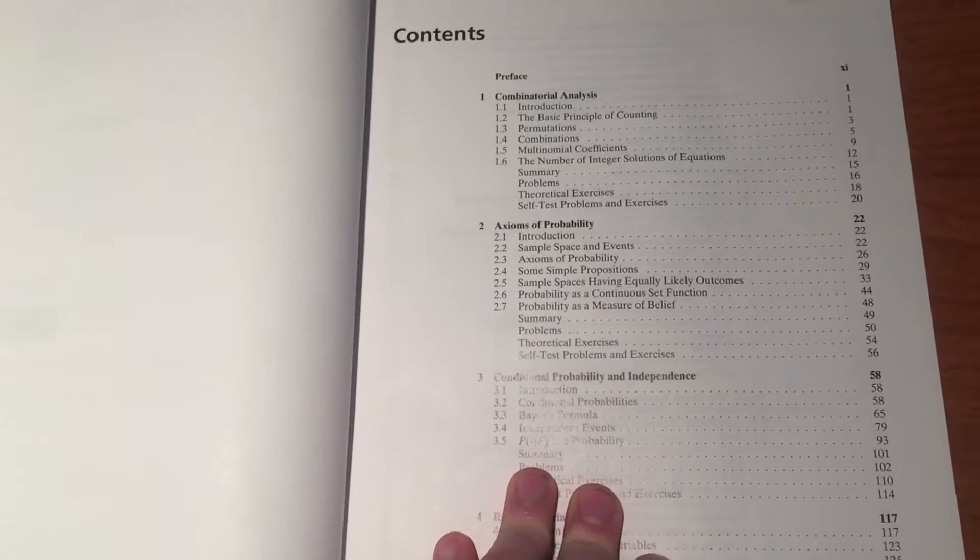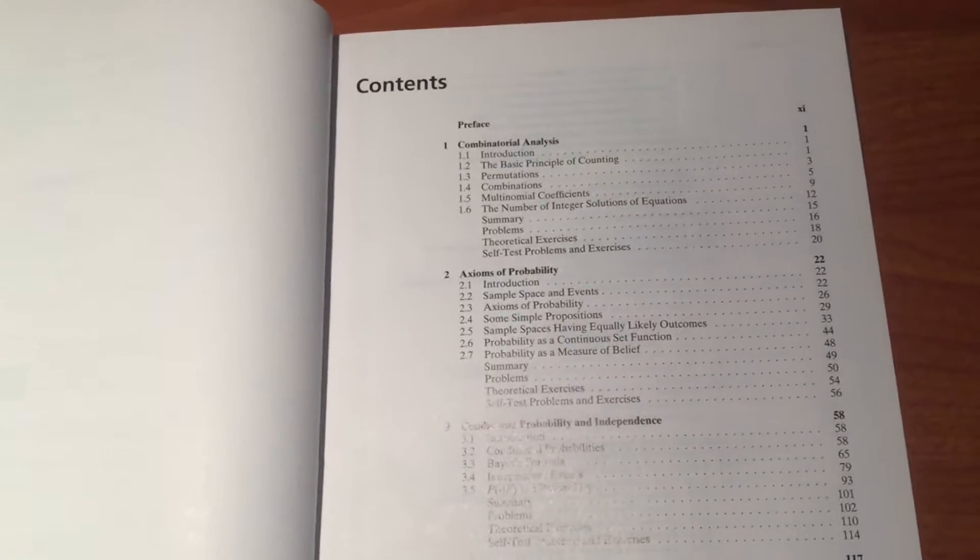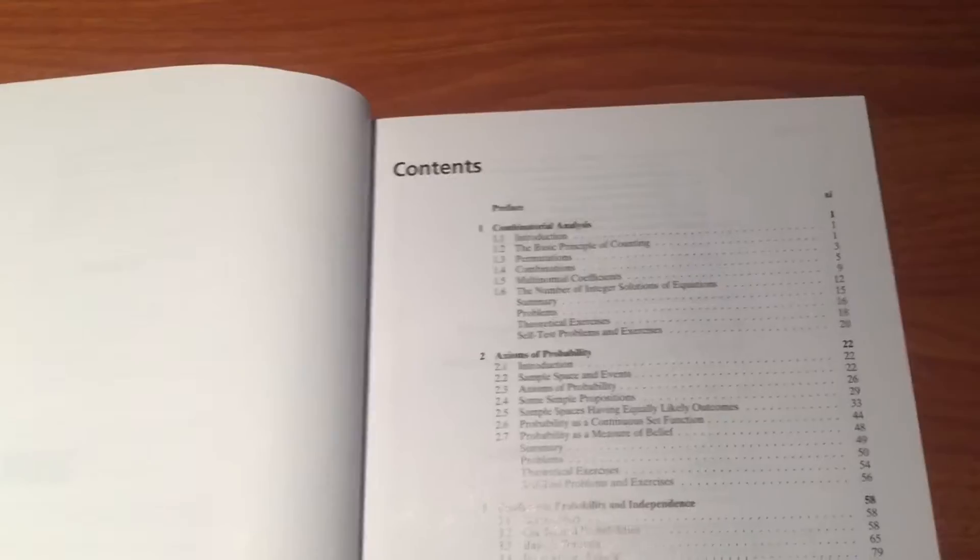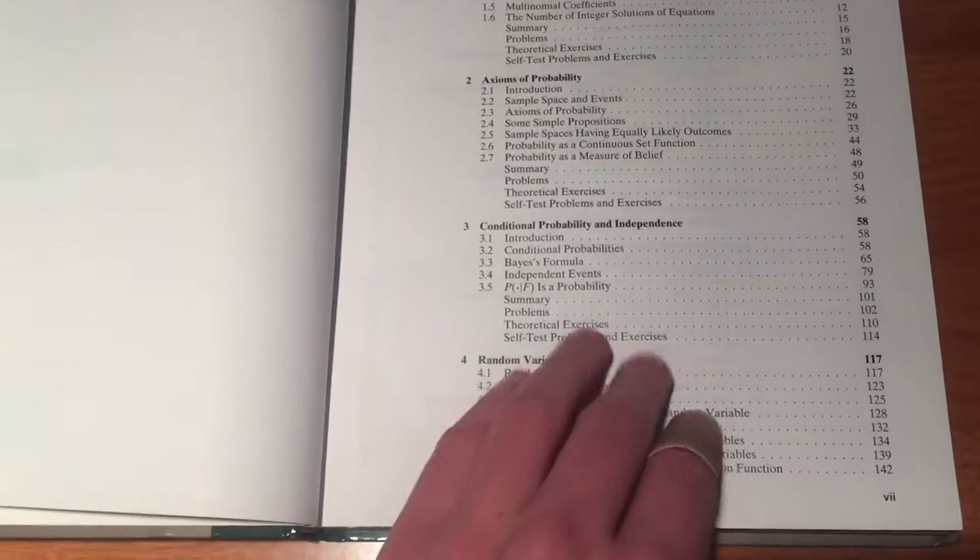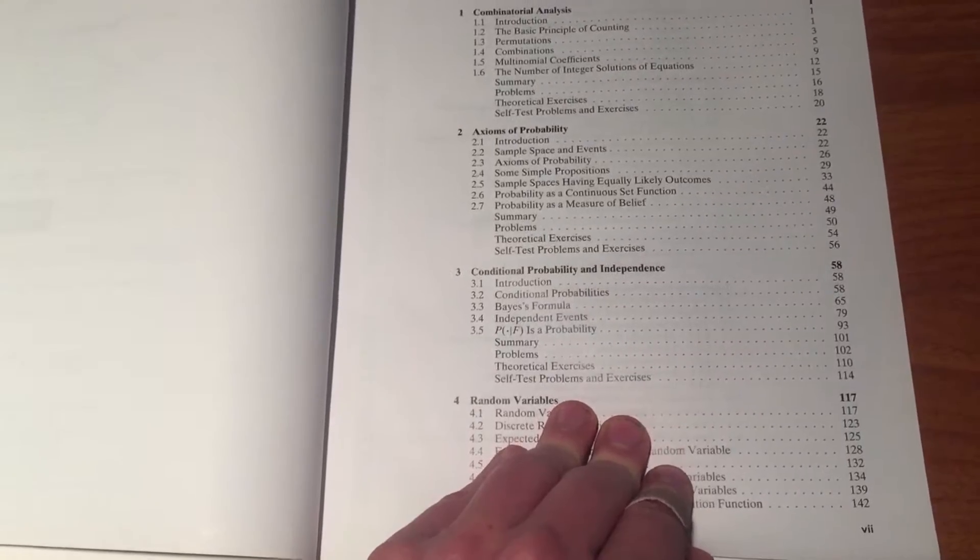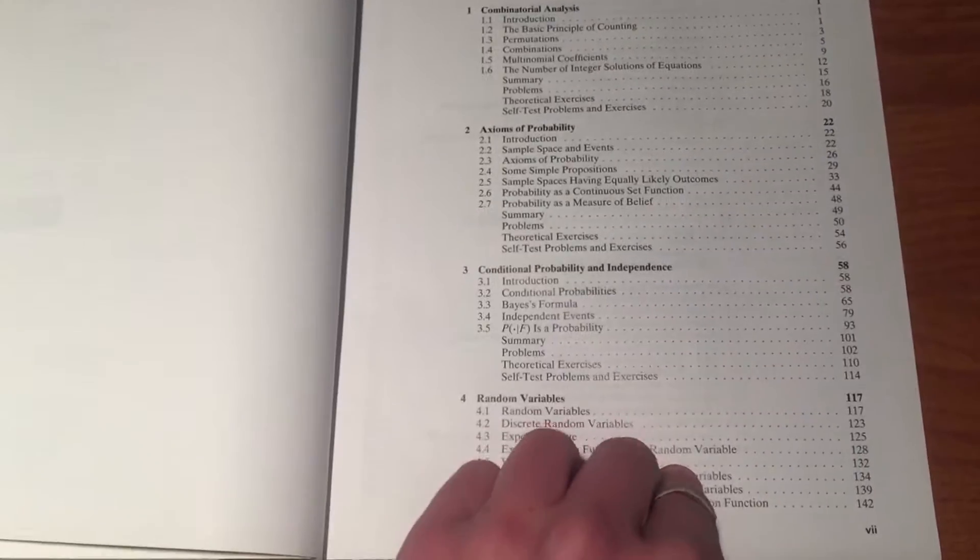The second chapter is the axioms of probability. So things like you can't have probabilities more than one or 100%, right? You can't have negative probabilities. They talk about conditional probability and independence, very fundamental ideas.